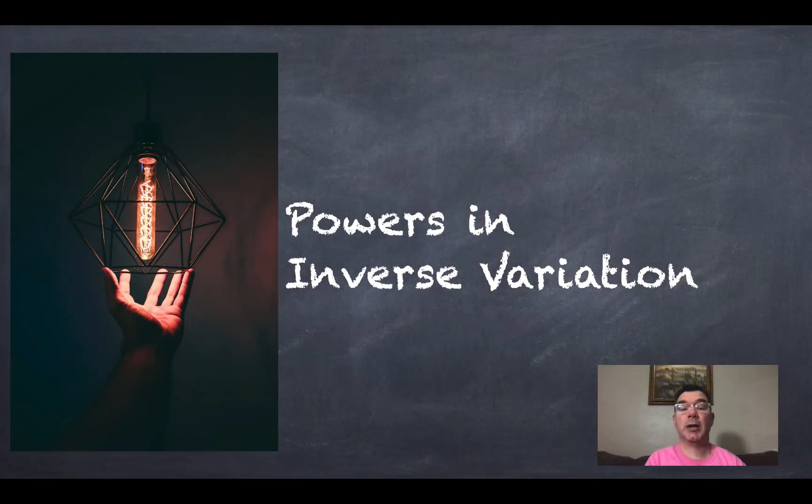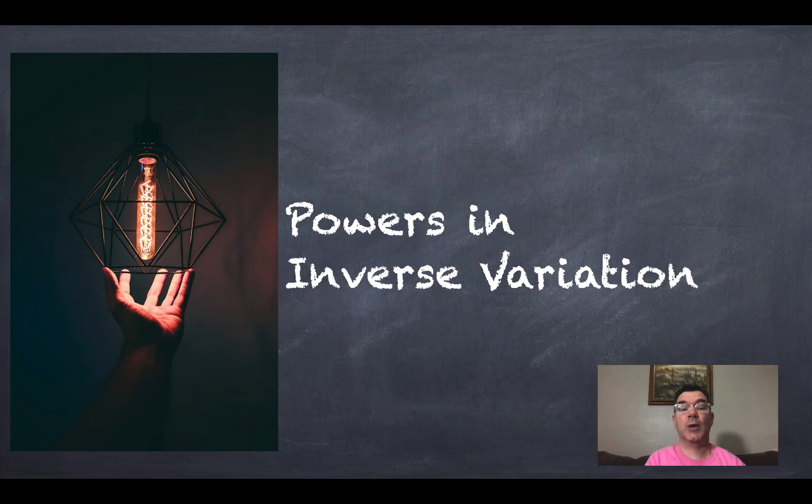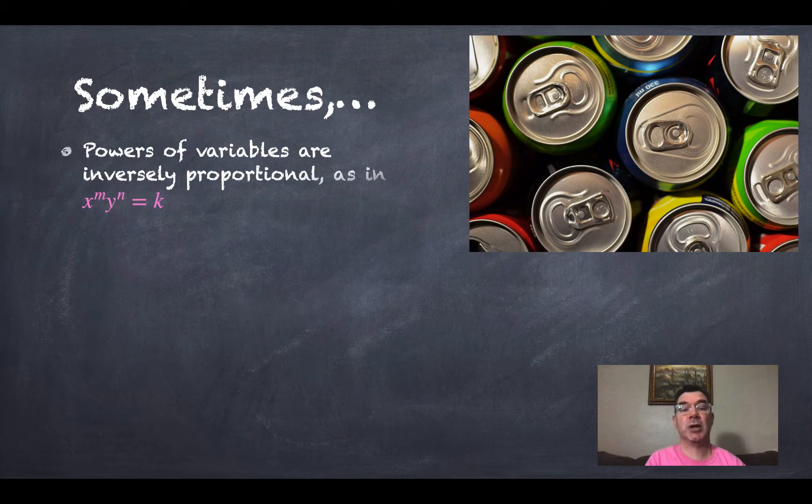Hello again. Today we're going to be talking about what happens when you have inverse variation but one or more of the variables has an exponent in it. We call that powers in inverse variation. So let's get started.